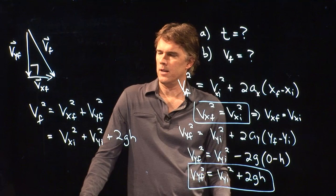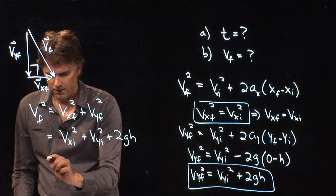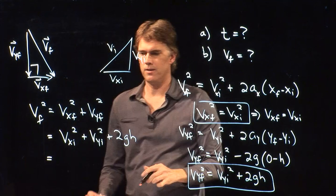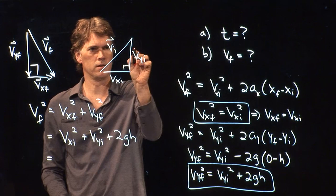And now here's the really cool thing. Vxi squared was this, vyi was that, and so that thing is also a right triangle. This is when we launch the thing.